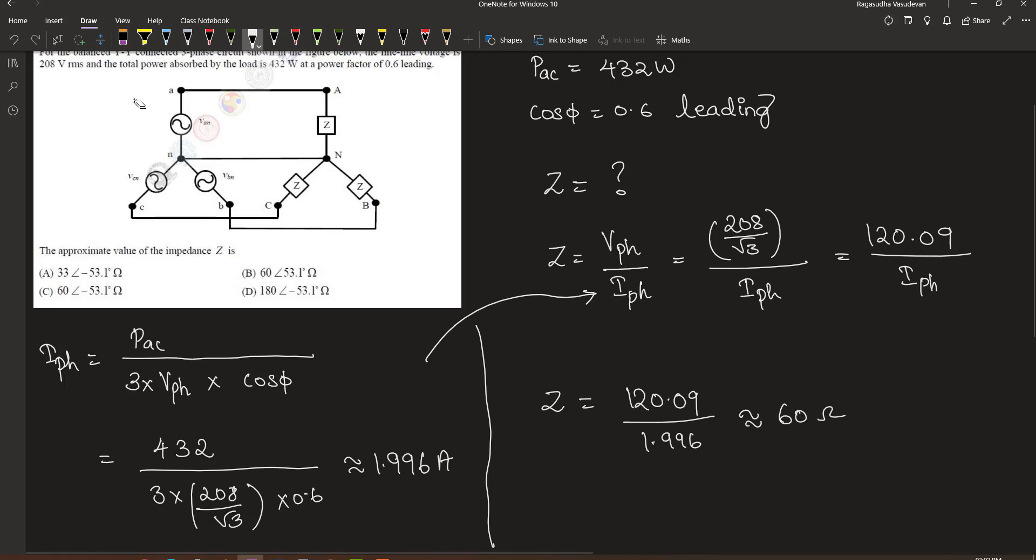Now we have to find out the load angle. The load angle is equal to cos inverse of power factor, which is 0.6, and this is approximately equal to plus or minus 53.1 degrees. How to find out whether the load angle is positive or negative?